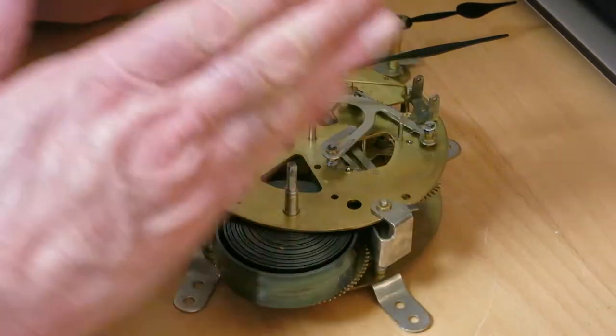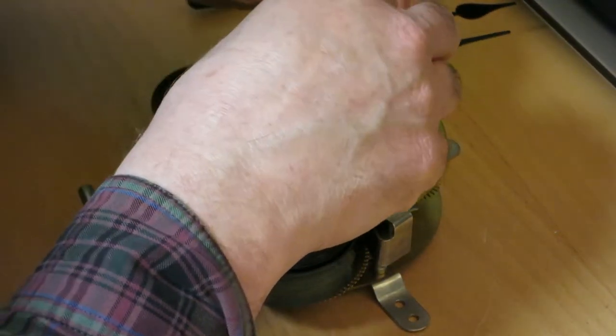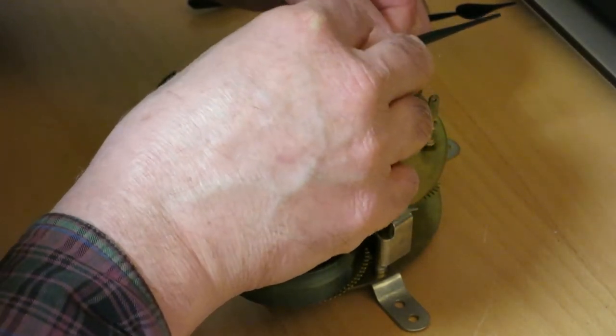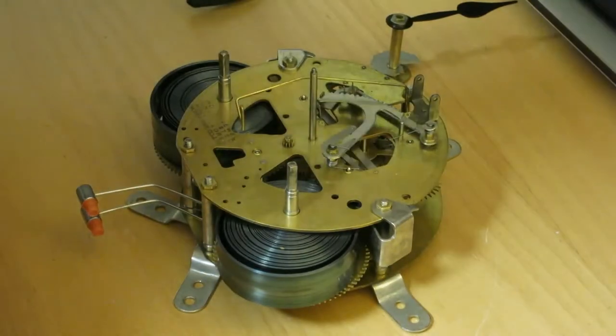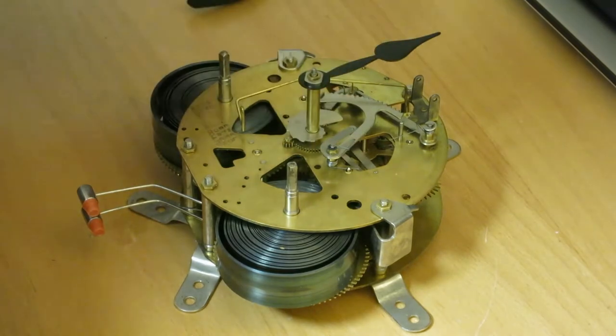So now that we know where the minute hand is, if the minute hand is on the hour, I can take that off. And I'm going to position the hour hand now, and with it the snail that controls how many strikes the clock does at any particular time. So I'm going to just drop it in here.